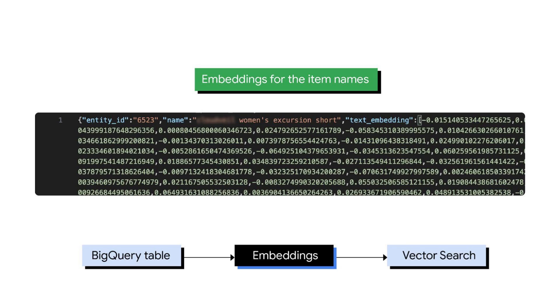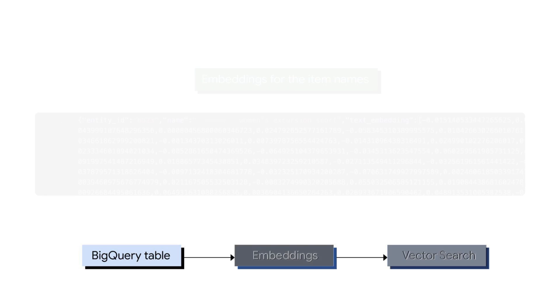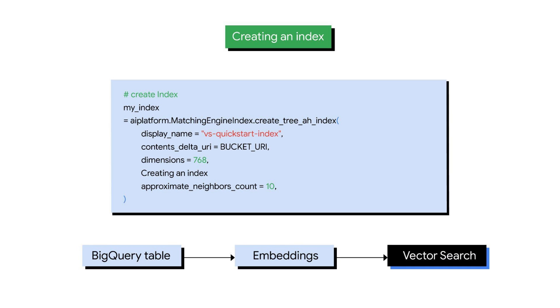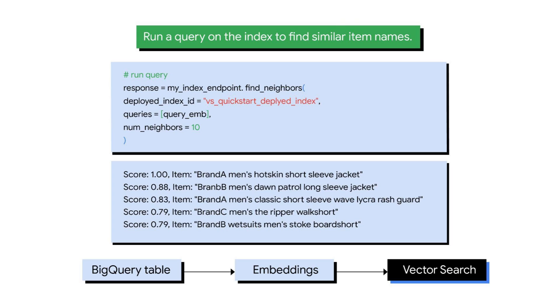We can specify the number of dimensions when you call the embedding API — in this case, a whopping 768 dimensions. Let's create an index by invoking the vector search APIs. This is where we'll select our algorithm, input your Cloud Storage address, and include parameters like dimensions. Google's indexing service is fast and only takes a few minutes for three-digit megabytes. Finally, we just need to deploy the index to an endpoint. The endpoint receives the query request, runs the vector search, and the rest is a bit like magic.